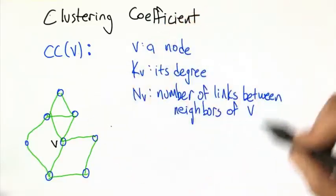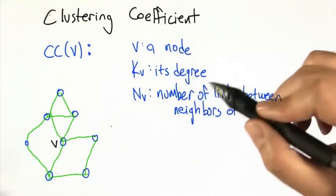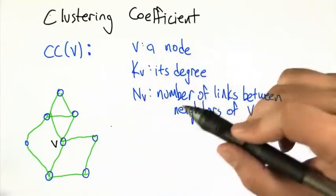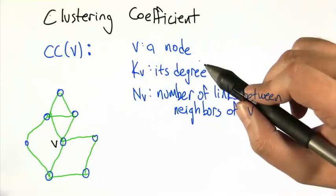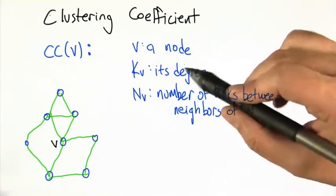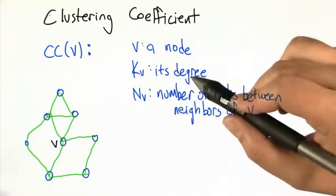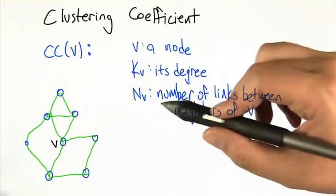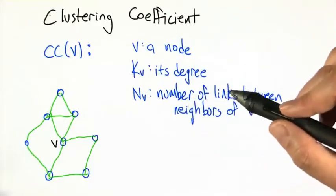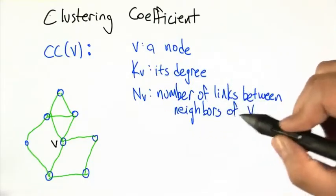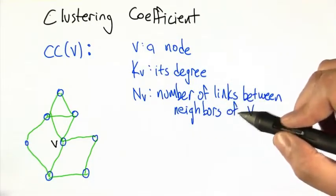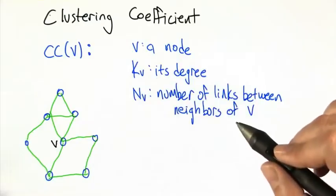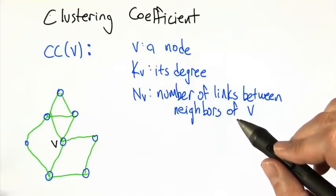We're going to generalize this to clustering coefficients for the entire graph next, but let's focus on a single node. So let's say v is that node, k sub v is its degree, and n sub v is the number of links between the neighbors of v.